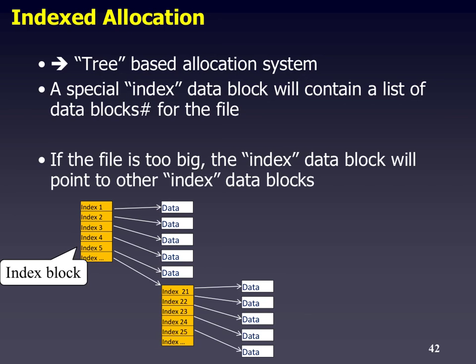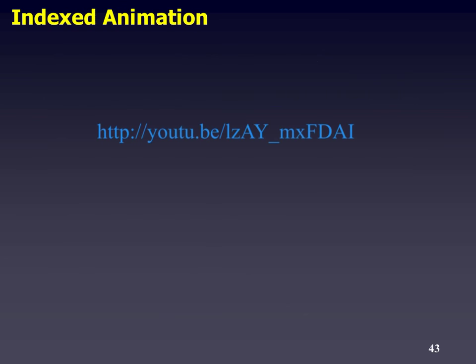The third type of allocation is called indexed — this is quite good, it's a tree-based allocation system. There's a special block called an index block which points to the next data block. If the file is too big, the index block will point to other index blocks — this is called an indirect block — which points to more. You can practically have infinite storage size depending on the operating system and file system; it's a very expandable system. Again, the animation will show you good examples of how it works.